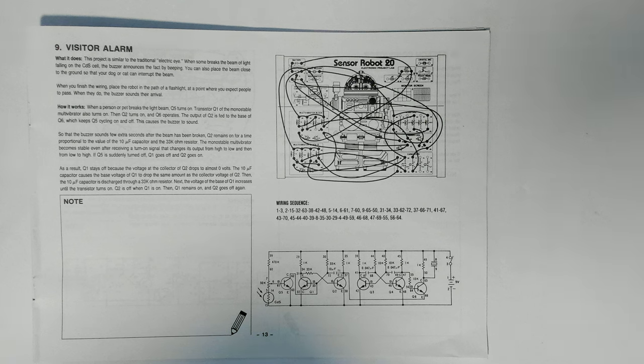How it works: When a person or pet breaks the light beam, Q5 turns on. Transistor Q1 of the monostable multivibrator also turns on. When Q2 turns on, then Q6 operates. The output of Q2 is fed to the base of Q6, which keeps Q5 cycling on and off. This causes the buzzer to sound.